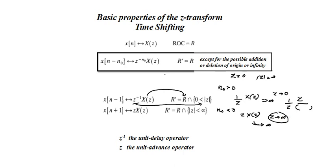Similarly, sometimes the Z term from X(Z) can cancel with the multiplied factor, which is why there is a deletion or addition of infinity or 0. Also, the factor Z raised to minus 1 — equivalently X(N minus 1) — is normally known as the unit delay operator. In the time domain, X(N minus 1) is a delay operation, and the equivalent operation in the Z-transform is Z raised to minus 1. Similarly, Z raised to plus 1 is known as the unit advance operator.